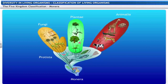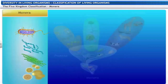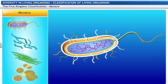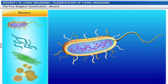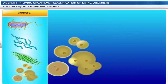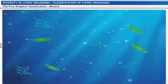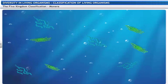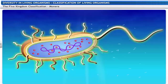Now let's take a good look at the five kingdoms. The kingdom Monera includes prokaryotic cells which lack an organized nucleus and membrane-bound cell organelles. Some of the common monerans are bacteria, blue-green algae or cyanobacteria, and mycoplasma. Monera can be autotrophic — getting nutrition by synthesizing their own food — or heterotrophic, getting their nutrition from the environment.